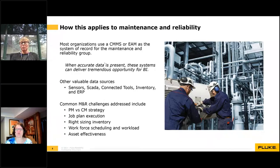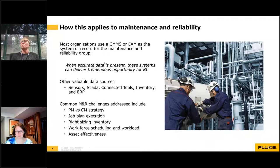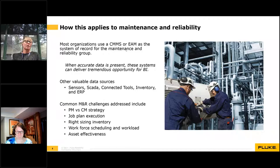Common maintenance and reliability challenges addressed by BI include PM versus CM strategy, job plan execution, right-sizing inventory (non-stock versus stock), and workforce scheduling and workload. For example, you estimated a job would take half an hour but it ended up taking two hours — why? You can answer those questions in BI. Asset effectiveness was also a huge lift for Monogram.